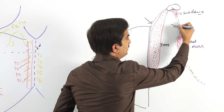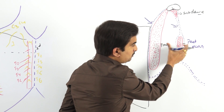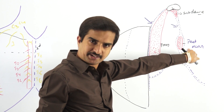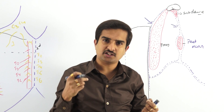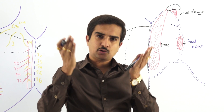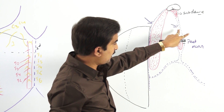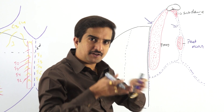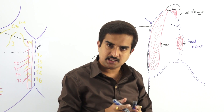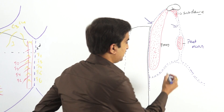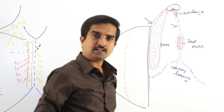After enclosing the subclavius muscle, it becomes the clavipectoral fascia. This clavipectoral fascia then splits again to enclose the pectoralis minor muscle. So, the clavipectoral fascia arises from the outer and inner lips of the longitudinal subclavian groove, encloses the subclavius muscle, then splits to enclose the pectoralis minor muscle, and after enclosing the pectoralis minor it finally blends with the axillary fascia.